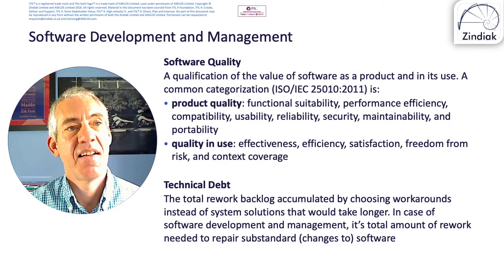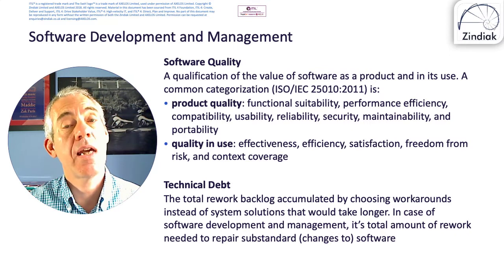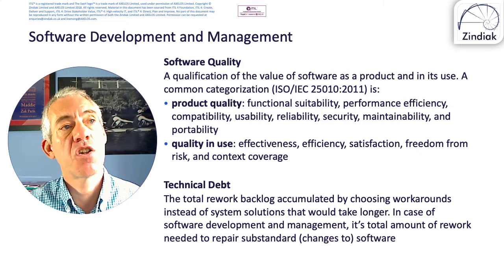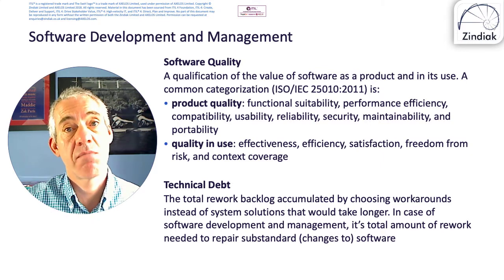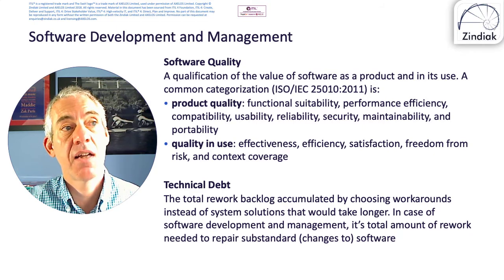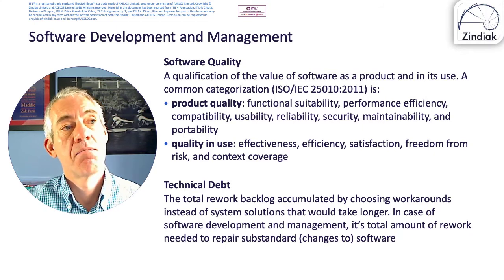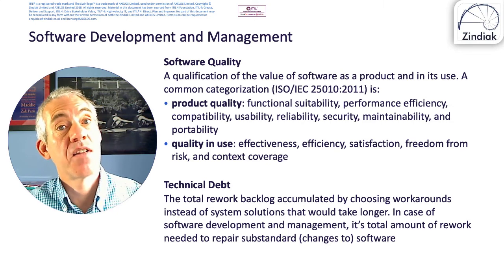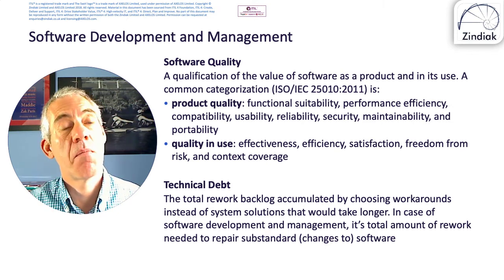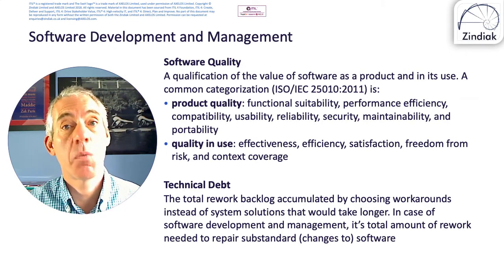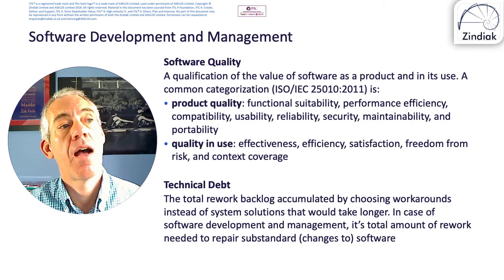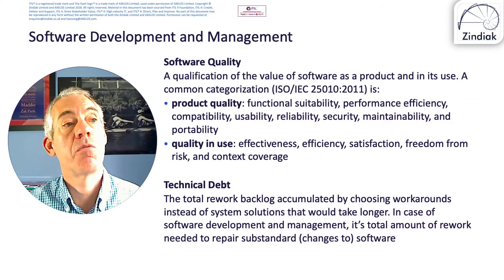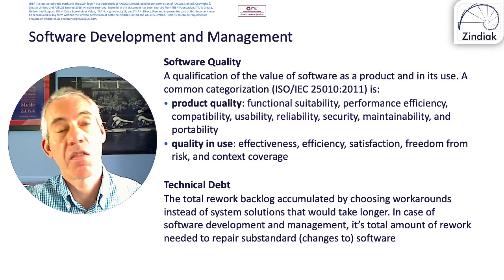Software quality is important, and you need to define what your organisation or team means by it. Things to consider: functional suitability - does it do what the customer needs? Performance efficiency - does it perform efficiently? Compatibility with other software and systems. Usability, reliability - does it always work the same way continuously? Security - obviously a major factor. Maintainability - can we change it easily? Portability, quality in use, effectiveness, efficiency, satisfaction, freedom from risk, and context coverage.